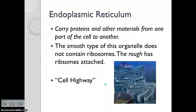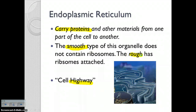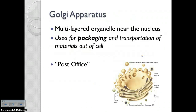The endoplasmic reticulum is known as the cell highway because it's used for transportation. It carries proteins and other materials from one part of the cell to another. This can be smooth or rough depending on whether or not it has ribosomes attached. If it does have ribosomes, we call it the rough ER. If it doesn't have ribosomes, it's the smooth ER.